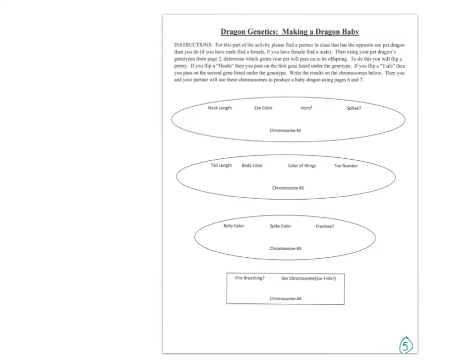Remember, after meiosis II, your sperm are going to have only one of each chromosome. So that's really key. Now you're going to have to find a partner in your class and either email them or call them — anybody in ninth grade you can share your genes with. So let's say you had little L, little E, big H, and little S.